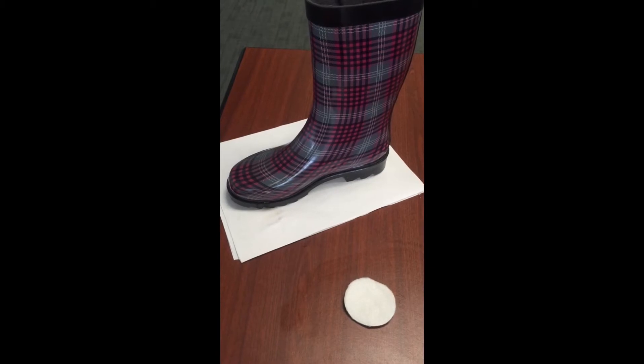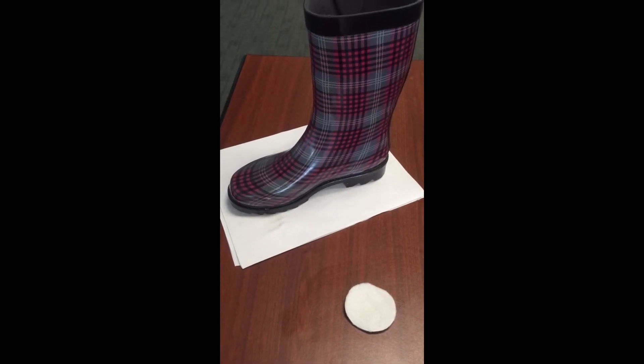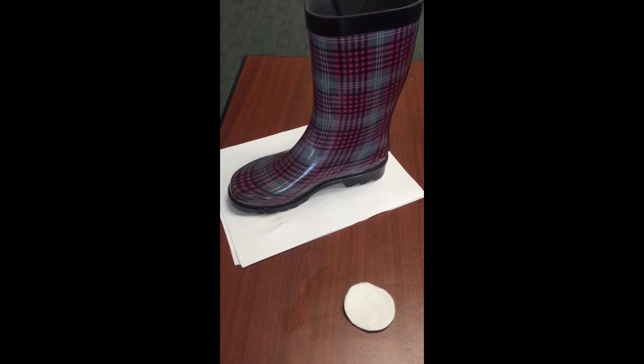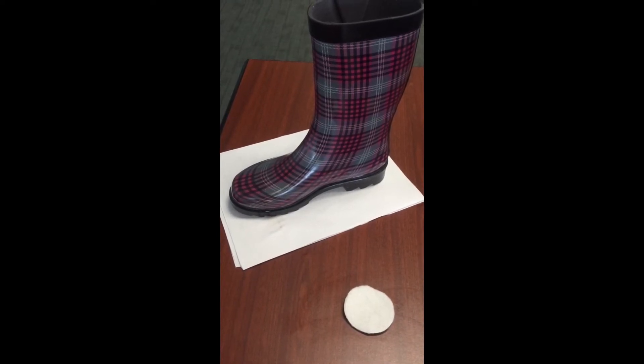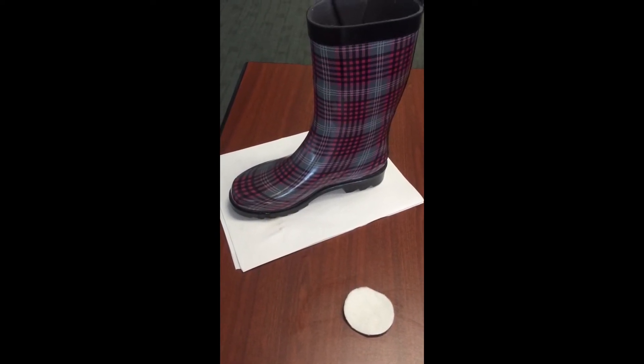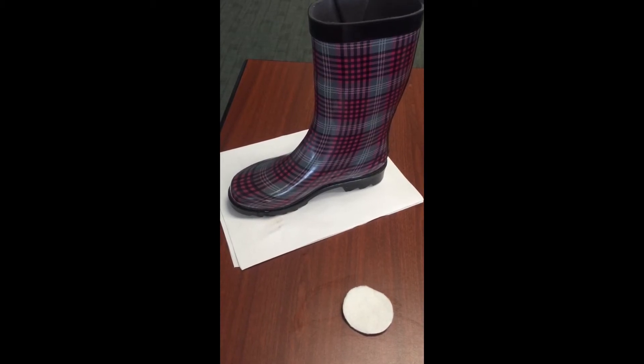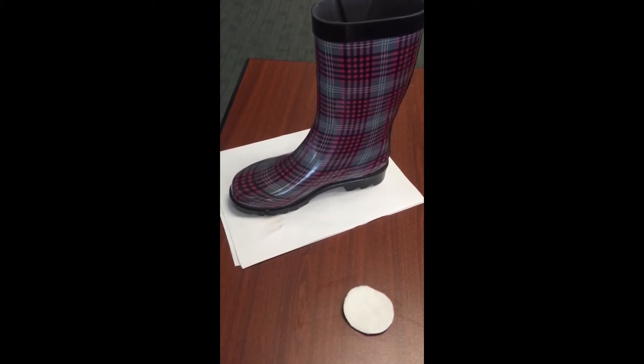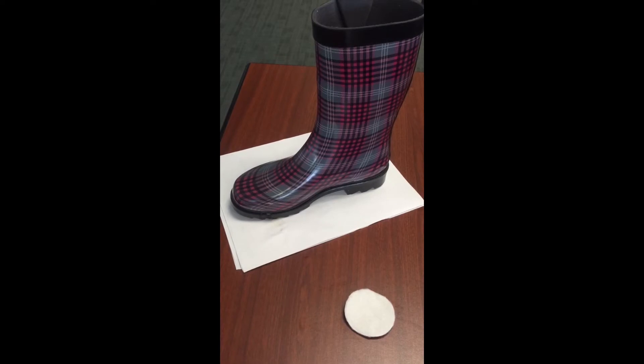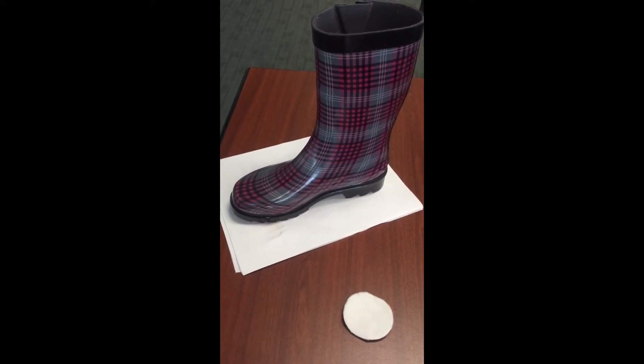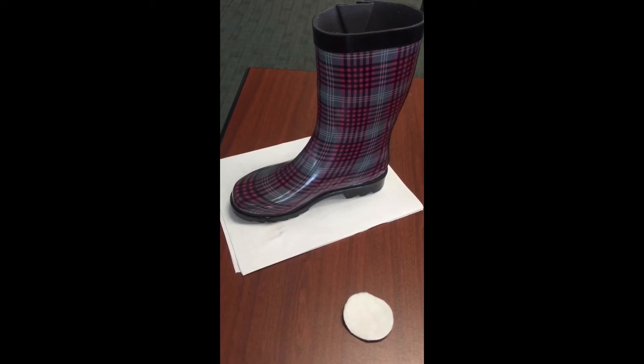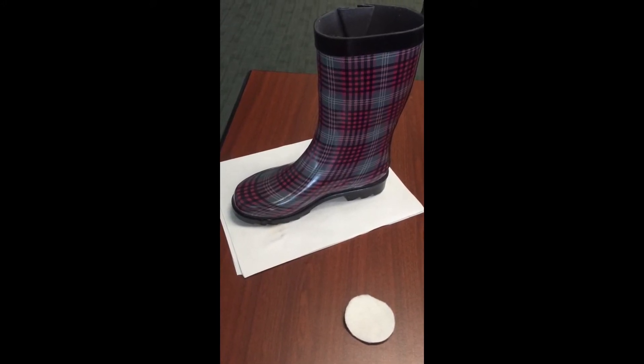In this demonstration, we will show the effects of surface hydrophobicity versus hydrophilicity when the surface is interacting with water. First, let's note that the surface of the rain boot is very hydrophobic, whereas the cotton swab is very hydrophilic due to many OH groups. So, let's see what happens when the rain boot interacts with water.